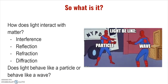We'll begin exploring this question by looking at how light interacts with matter. The different ways light can interact with matter are by interfering with each other, reflecting off a surface, refraction — when a particle or wave enters a new medium — and diffraction — when a particle or wave hits a barrier, obstacle, or opening. Waves and particles interact differently in these situations, so by examining them we can determine if light behaves more like one or the other.